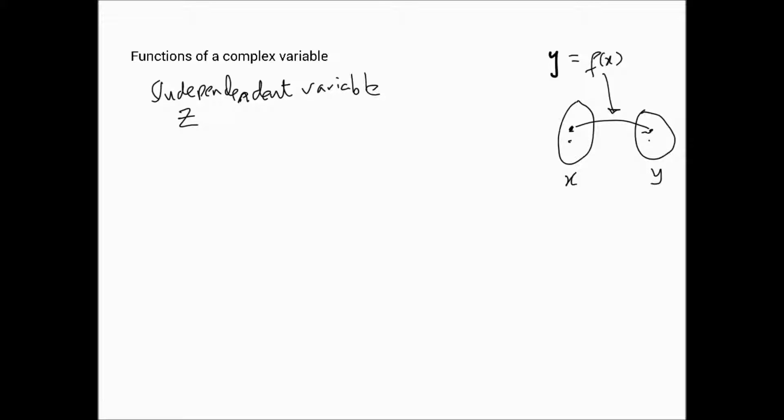And we're going to say that w is the dependent variable. And the relationship is as follows: w is equal to f of z. Just like we had y equals f of x, now we have w equals f of z. However, what you have to keep in mind is that both z and w are complex variables now.